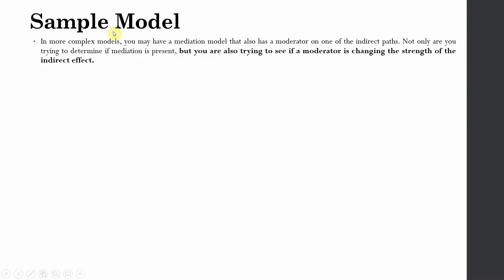In more complex models you may have a mediation model that also has a moderator on one of the indirect effects. In this case we have got 2 moderators in 2 of the indirect effects. Not only are you trying to determine if mediation is present, but you are also trying to see if the moderator is changing the strength of the indirect effect.